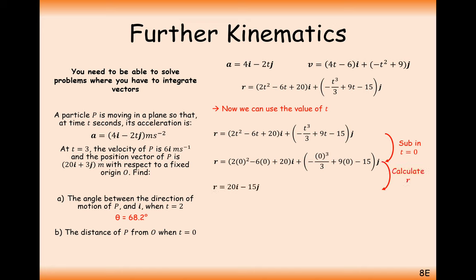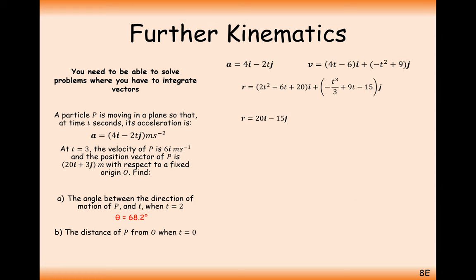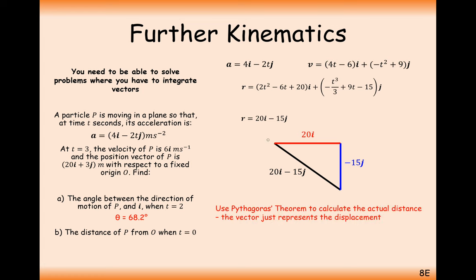Writing the final answer with D included, grouping i and j components, then substituting t equals 0, the position vector is 20i minus 15j. To find the distance from O, we use Pythagoras: travelling 20 to the right and 15 down, the distance from O is the square root of 20 squared plus 15 squared, which equals 25 metres.